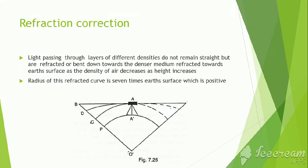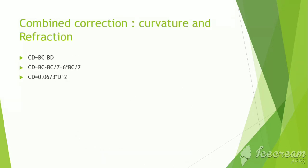Now, we will come to refraction correction. Light passing through layers of different densities does not remain straight but is refracted or bent down towards the denser medium. Near the earth surface, the density of air decreases as height increases. Radius of this refracted curve is 7 times earth's radius, which is positive. Now, combined correction: curvature correction and refraction correction.